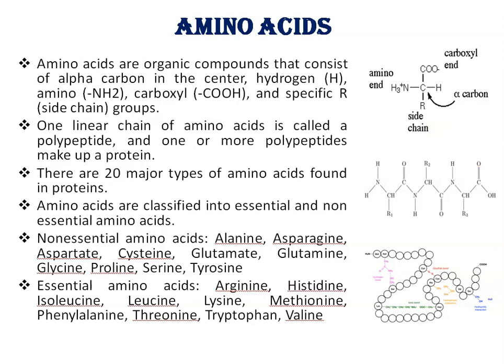Amino acids are classified into two types: essential amino acids and non-essential amino acids. Non-essential amino acids can be readily synthesized in the body, and these include alanine, asparagine, aspartate, cysteine, glutamate, glutamine, glycine, proline, serine, and tyrosine.